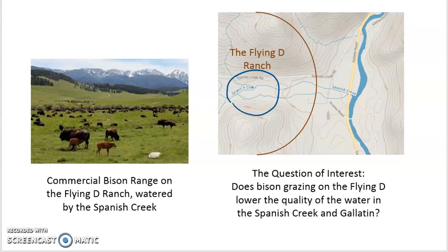Byproducts of the operation, essentially the waste from the bison, flows into the Spanish Creek, which flows into the Gallatin. So the question of interest, given that the Gallatin is a water source for Bozeman, provides irrigation for ranchers, drinking water...